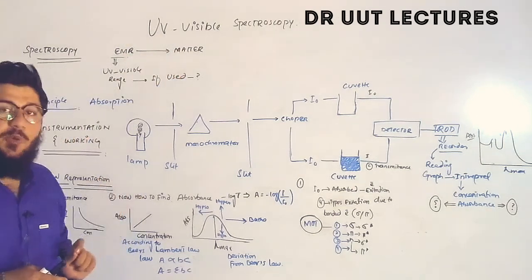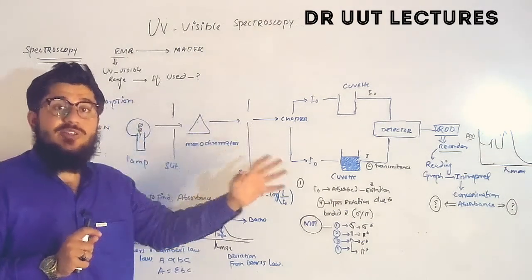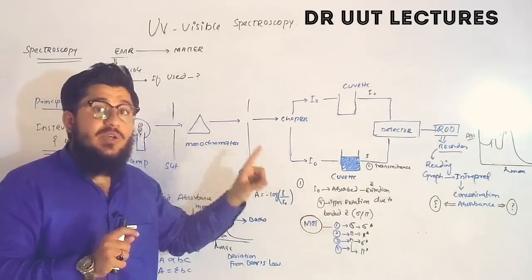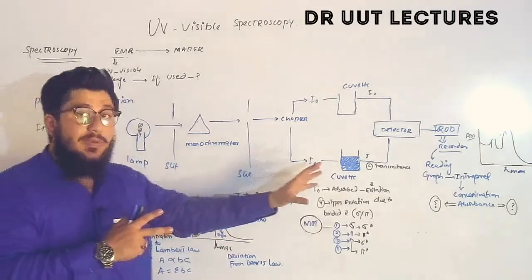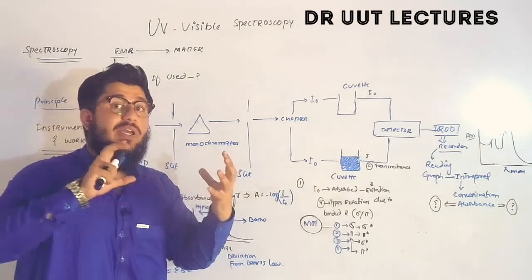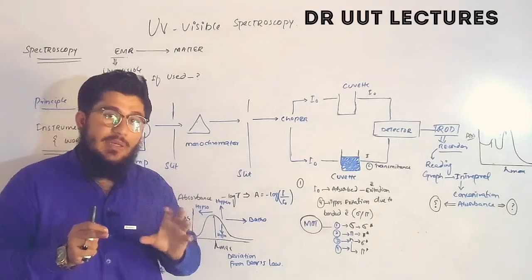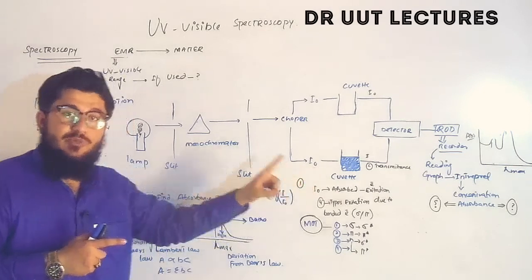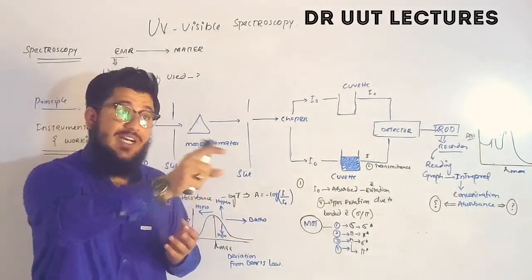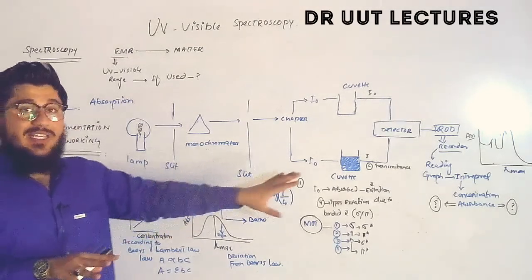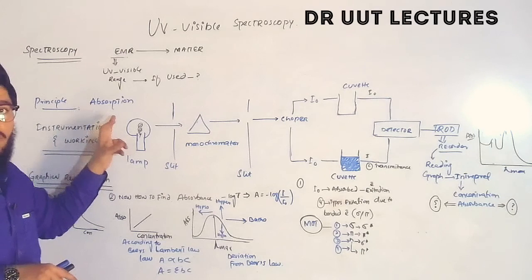The next point is principle. What is the principle of UV visible spectroscopy? Just remember one important point: whatever is happening with your sample in the particular spectroscopy — that is actually the principle. In our spectroscopy, our sample is absorbing electromagnetic radiation, so the principle is absorption. In other spectroscopies, other functions might happen, and those would be the principle.